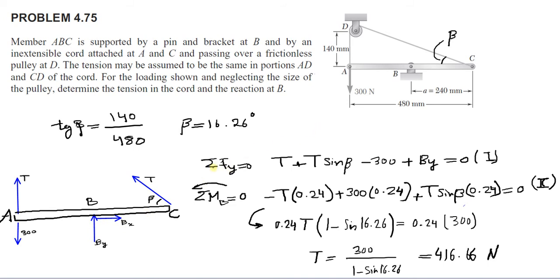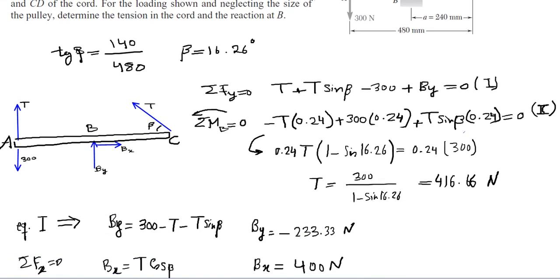The first equation I use is ΣFy = 0, so T plus T·sin(β) minus 300 plus By equals zero. I call this Equation 1.